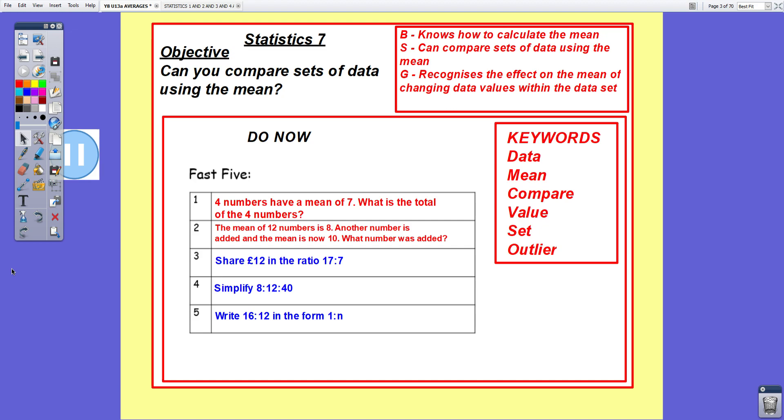And so statistics seven, our objective is can you compare sets of data using the mean? Success criteria: bronze knows how to calculate the mean, which I'm hoping you do; silver can compare sets of data using the mean, and that is our main focus for today; and gold recognises the effect on the mean of changing data values within the data set.